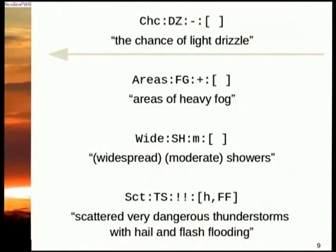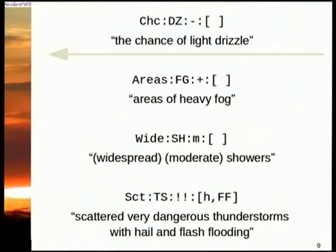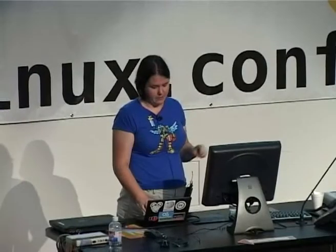Here are some examples of keys and how they'd be represented in text. There's a pretty decent correspondence — coverage words come first, then intensity words, then type words, then attribute words last. As a first pass, that seems like a fairly decent model for converting these keys into words.